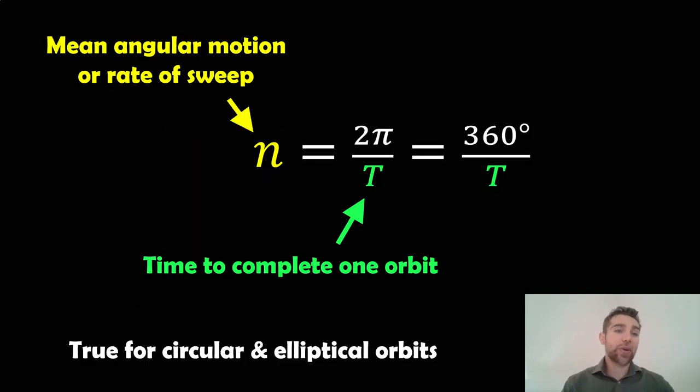So how do we actually calculate it, then? Well, first, we need to know the mean angular motion, or this is the rate of sweep that it's actually doing on its orbit. And this is denoted with n. And you can do that in radians or in degrees. It could be 2π over T, or 360 degrees over T, where T is actually the orbital period, or the time it takes to do one full orbit. And this is true for circular and elliptical orbits, because it's the average, the mean angular motion. It's not the instantaneous angular motion, which for an elliptical orbit is going to change in time as it goes around.